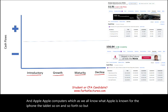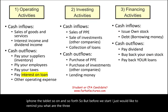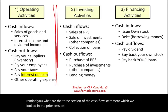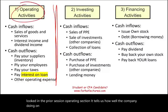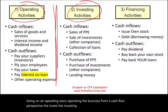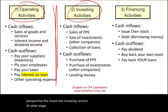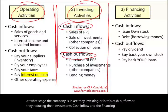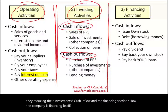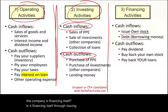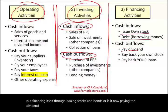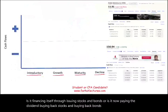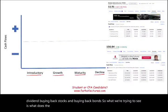Before we start, I'd like to remind you of the three sections of the cash flow statement, which we looked at in the prior session. The operating section tells us how well the company is doing on an operating basis from a cash flow perspective. The investing section shows at what stage the company is — are they investing, which is a cash outflow, or reducing investments, a cash inflow? And the financing section shows how the company is financing itself — through issuing stocks and bonds, or paying dividends and buying back stocks and bonds.